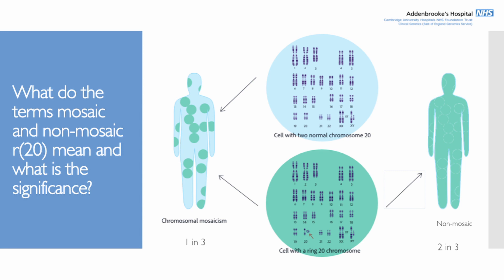There's some controversy about what the significance of mosaicism is in ring 20. To some extent it gives an idea of when symptoms might develop — the age of onset of epilepsy and how severely somebody may be affected — but it doesn't tell us exactly when those symptoms will develop or how severe they'll be. In general, for children with non-mosaic ring 20, or a higher percentage of cells carrying ring 20, seizures tend to begin earlier, but there's no hard and fast rule — there's always variability.